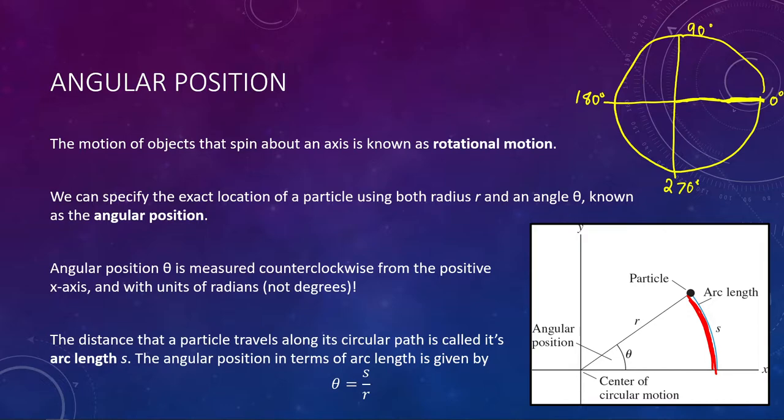We don't use that equation much in this class, but we are going to use it here just to define a new unit. Typically up until this point, we've been using degrees as our unit for angles. However, when we talk about rotational motion, we have to use radians instead of degrees. Both of them measure angles, just like meters and feet measure a distance — here we're talking about radians or degrees measuring an angle.